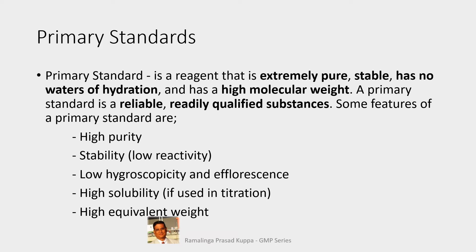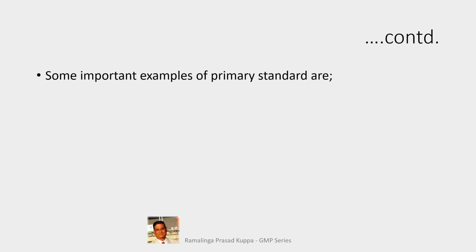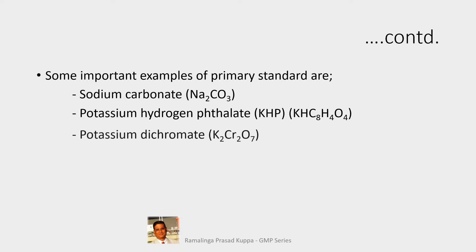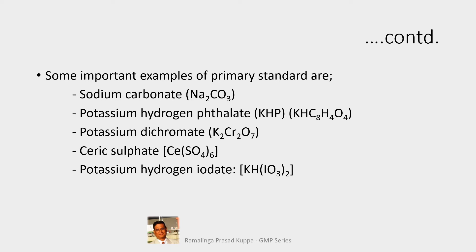Hygroscopicity indicates the capacity to absorb moisture from the atmosphere, while efflorescence is the property of some substances to lose wholly or partly their water when their crystals are exposed to dry air, even for a short period. High solubility is also required so the substance dissolves completely in water for titrations. Important examples of primary standards include sodium carbonate, potassium hydrogen phthalate, potassium dichromate, ceric sulfate, potassium hydrogen iodate, and sodium oxalate.